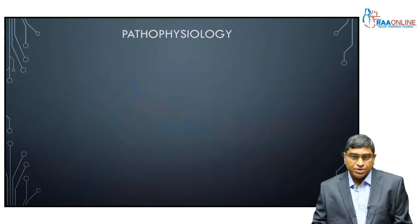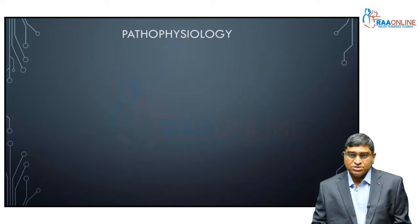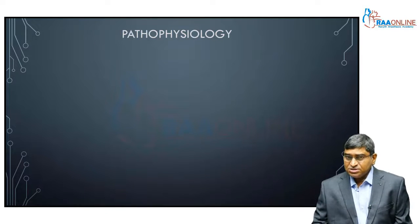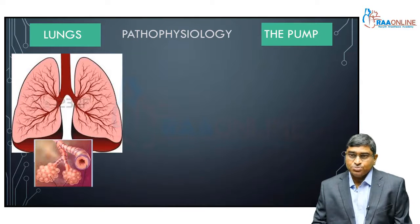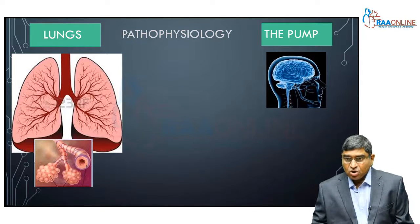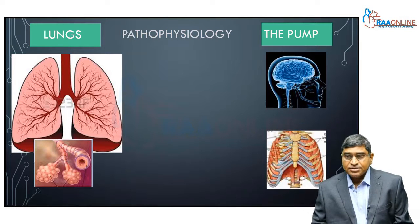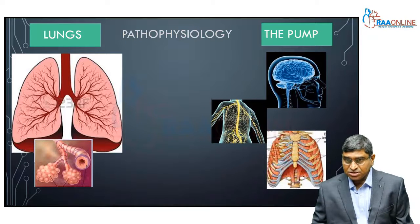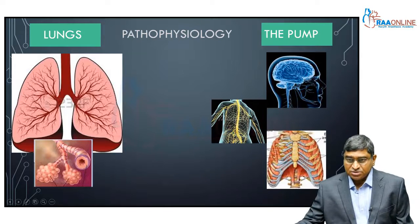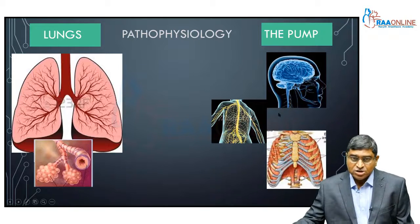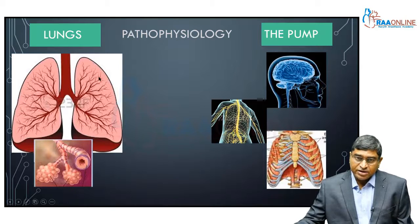Why does respiratory failure occur? What is the pathophysiology? The respiratory system has two parts: one is the lungs, which help in gas diffusion, and the other is the respiratory pump, which involves the respiratory controller — that is, the central nervous system — the respiratory muscles, and the nervous system that connects them. A problem with any of these parameters — the respiratory controller, the respiratory muscles, or the nervous system connecting them — can lead to pump failure.